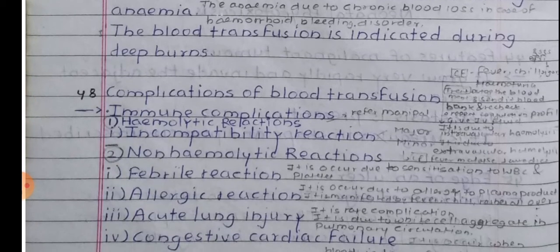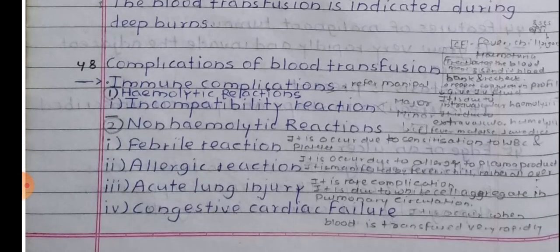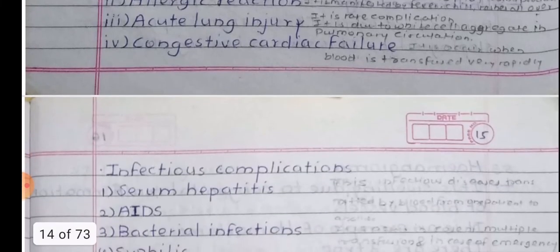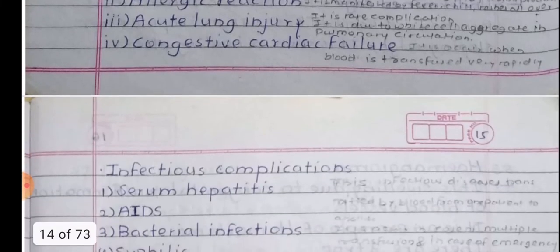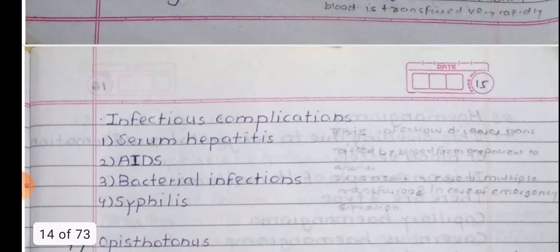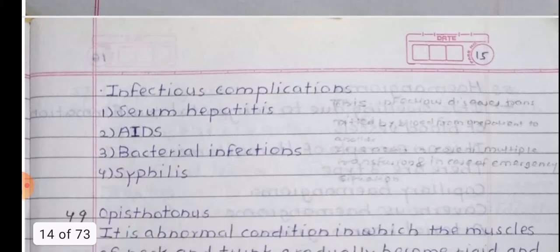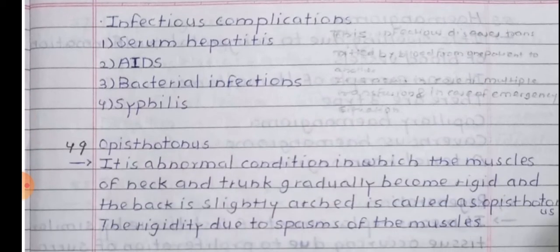Complications of blood transfusion: Immunological complications include haemolytic reactions, incompatibility reaction, non-haemolytic reactions such as febrile reaction, allergic reaction, acute lung injury, and congestive cardiac failure. Infectious complications include serum hepatitis, AIDS, bacterial infections, and syphilis.